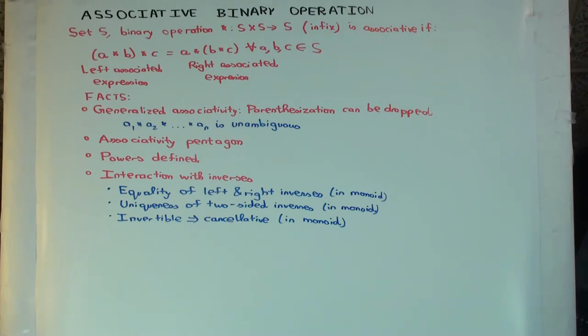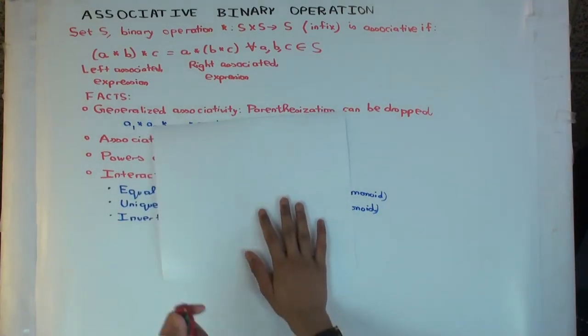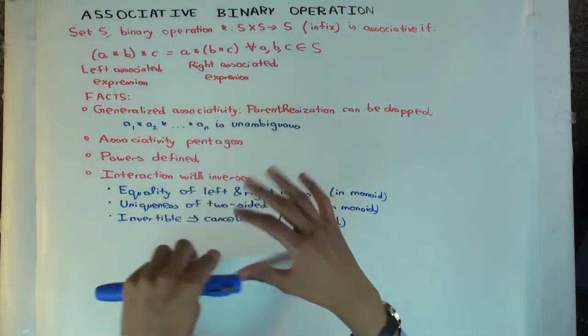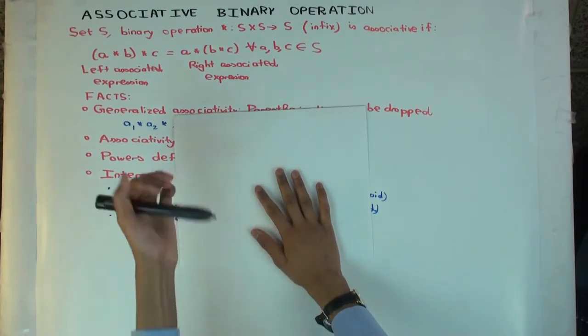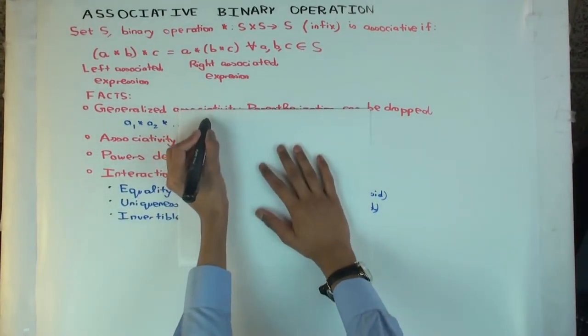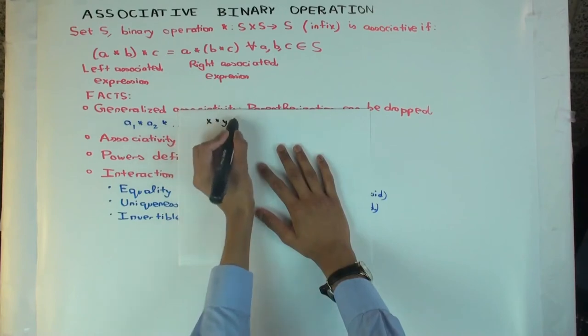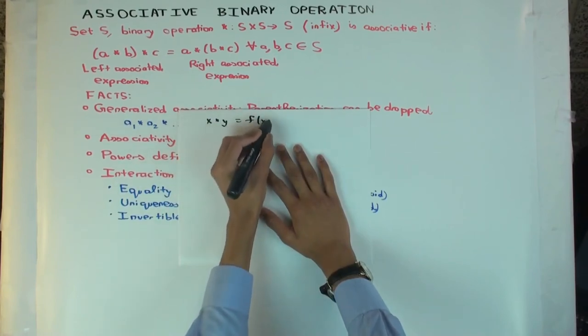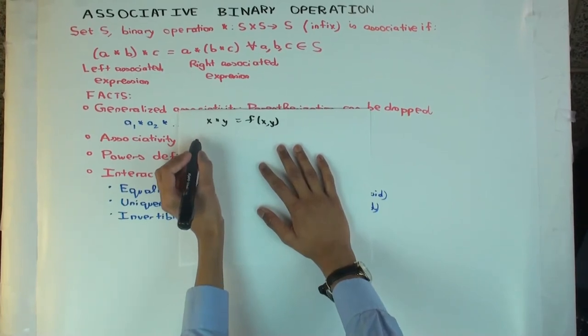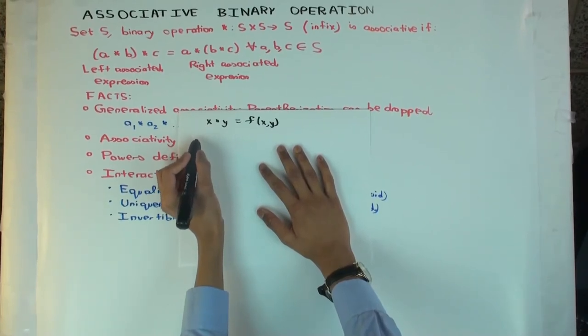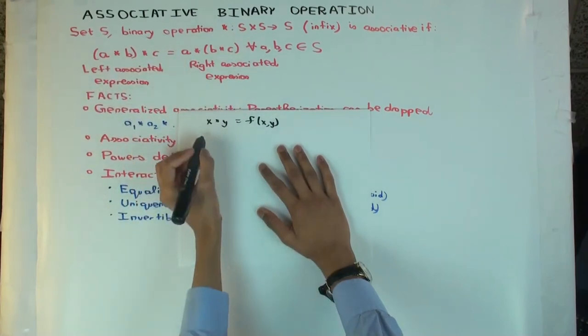Now what I want to talk about here, before I do that, let me say something interesting, which is, suppose instead of this infix notation, suppose instead of using star in between, I use the conventional where we write functions. So, I wrote the binary operation as F. So, instead of X star Y, I wrote that as F of X, Y. Then how would I write associativity?